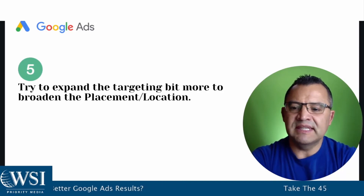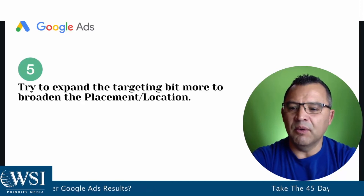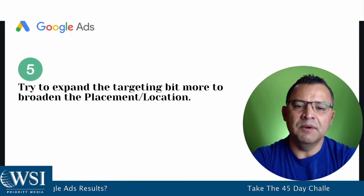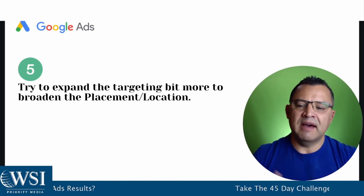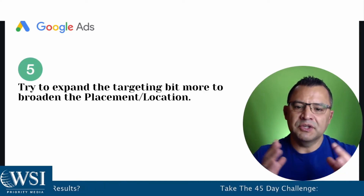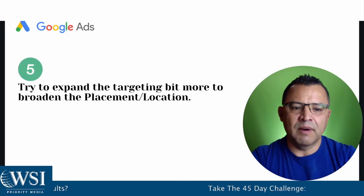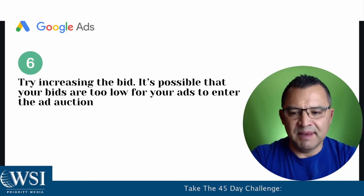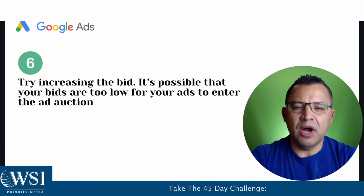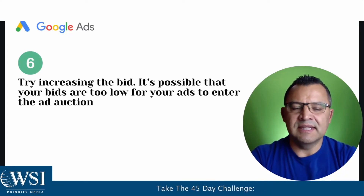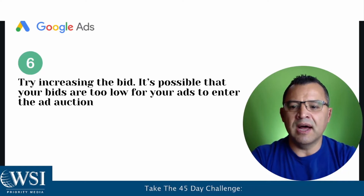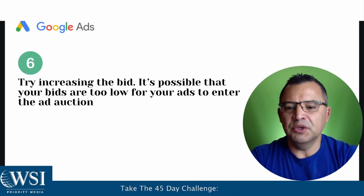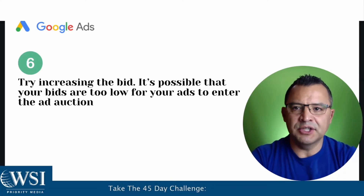Number five is to try to extend the targeting a little bit more and broaden the placement location. You can expand where you have your placements and make sure you're really covering the right area. And then finally, the bid — this is probably the most common one I see. Your bids are just not where they need to be, and it's possible that your bids are just too low for your ads to enter the ad auction.